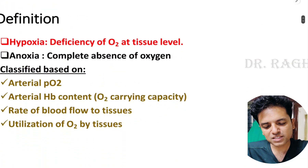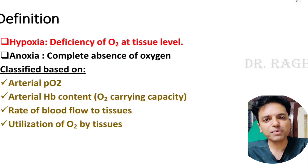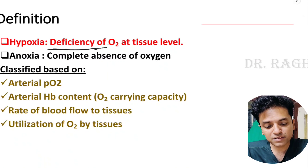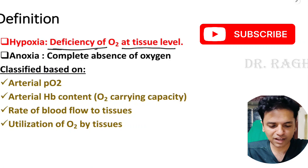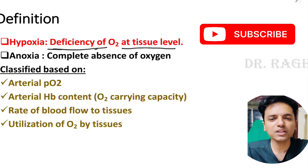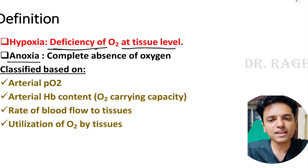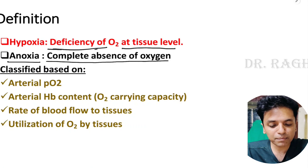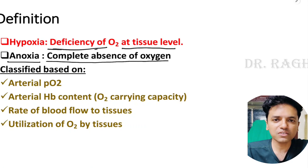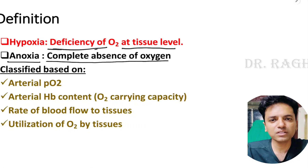First, let's understand the definition. Hypoxia means deficiency of oxygen at the level of the tissues — there is lack of oxygen at the tissue level. Along with hypoxia, we also need to understand anoxia, which means complete absence of oxygen at the tissue level. So deficiency of oxygen at the tissue level is hypoxia, whereas complete absence is anoxia.